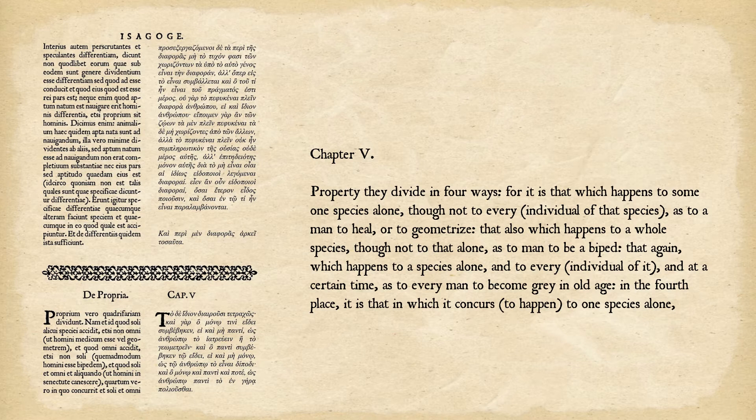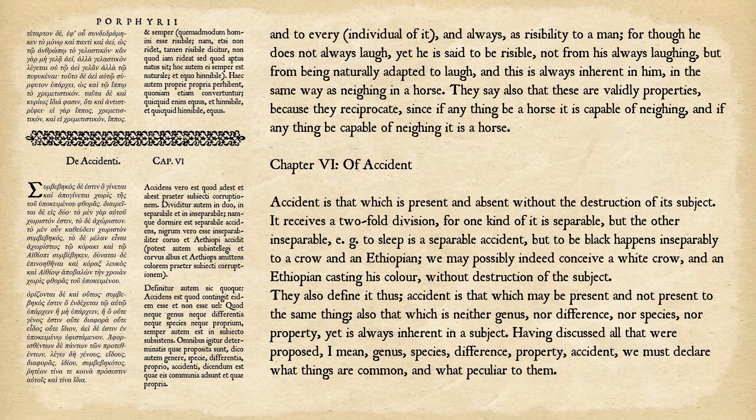The third kind is that which happens to a species alone, and to every individual of it, but only at a certain time — as to every man to become gray in old age. In the fourth place, it is that which happens to one species alone, and to every individual of it, and always — as risibility to a man.